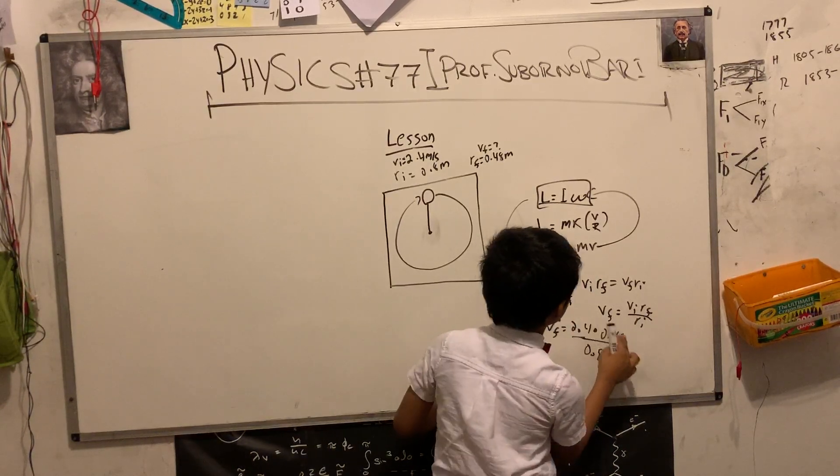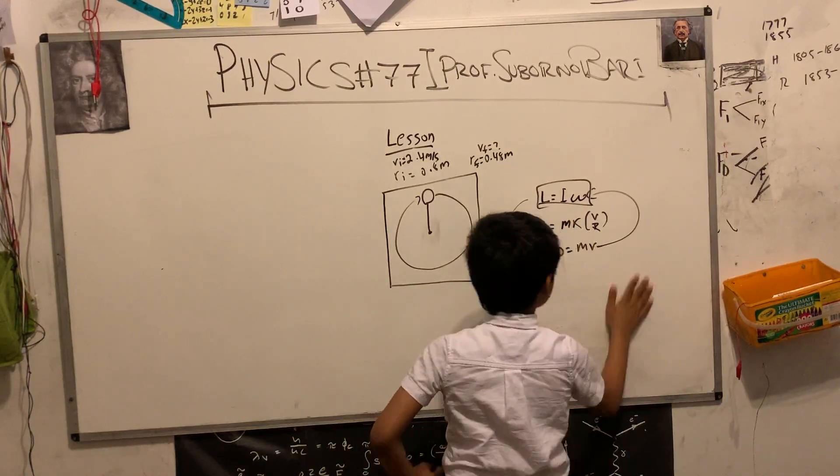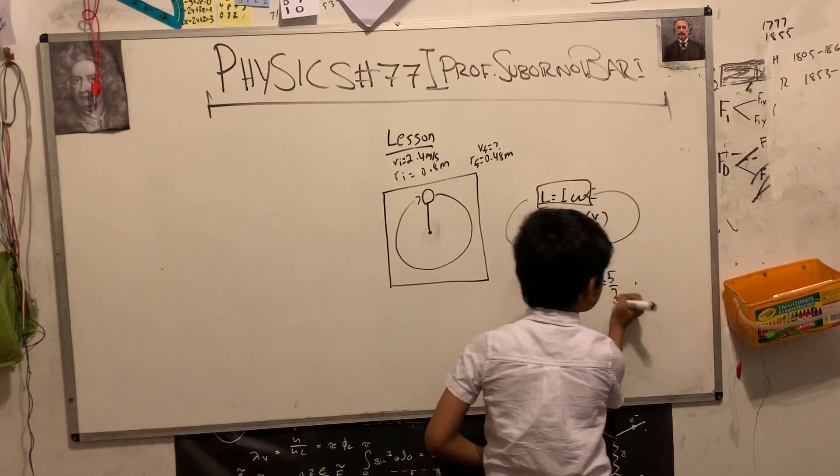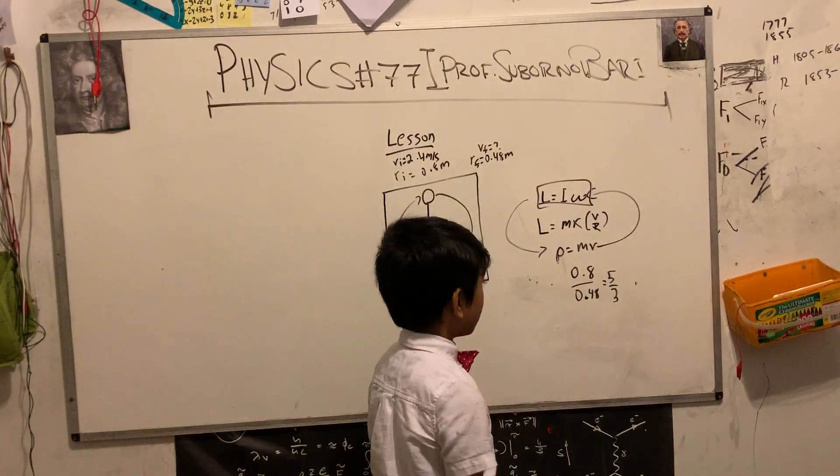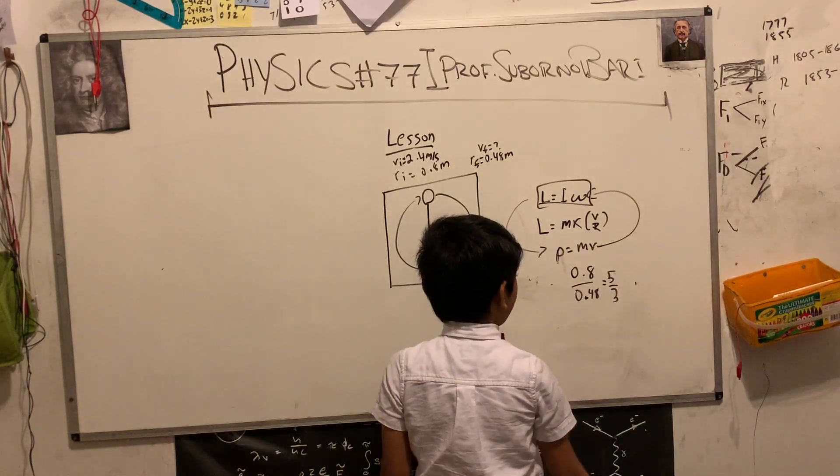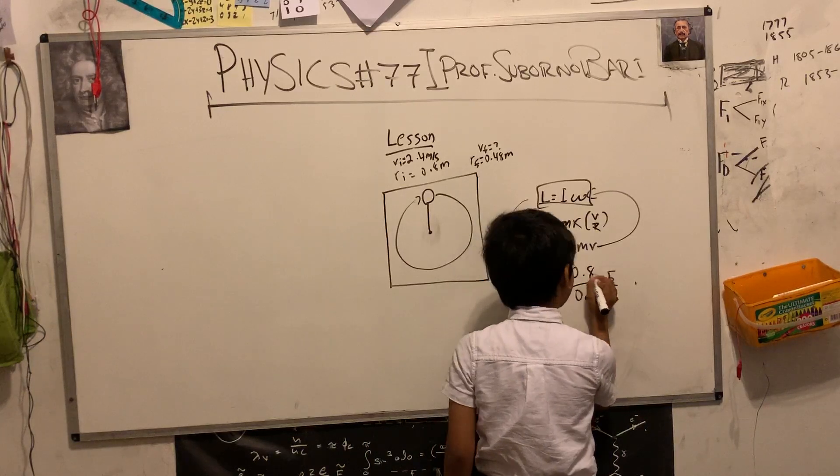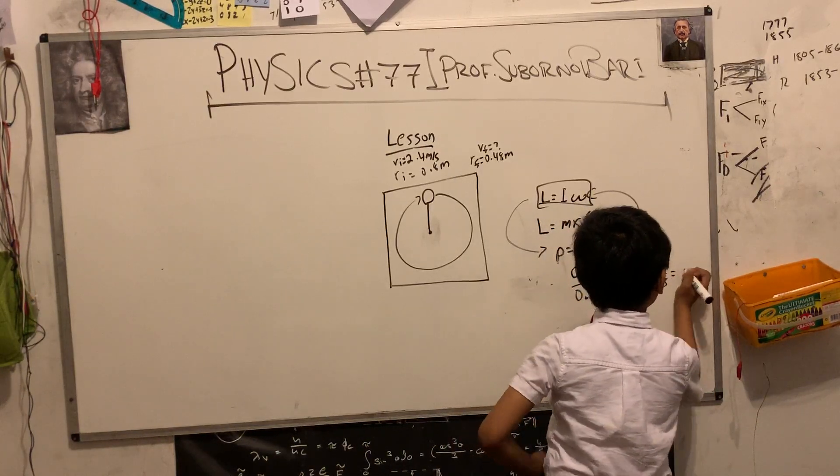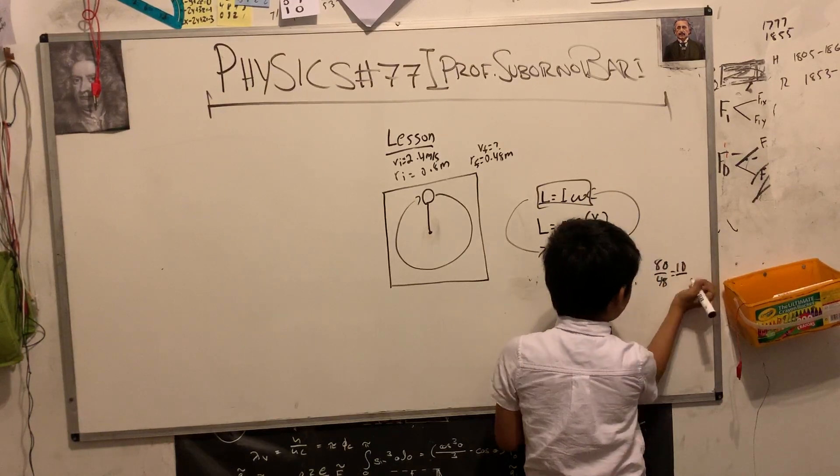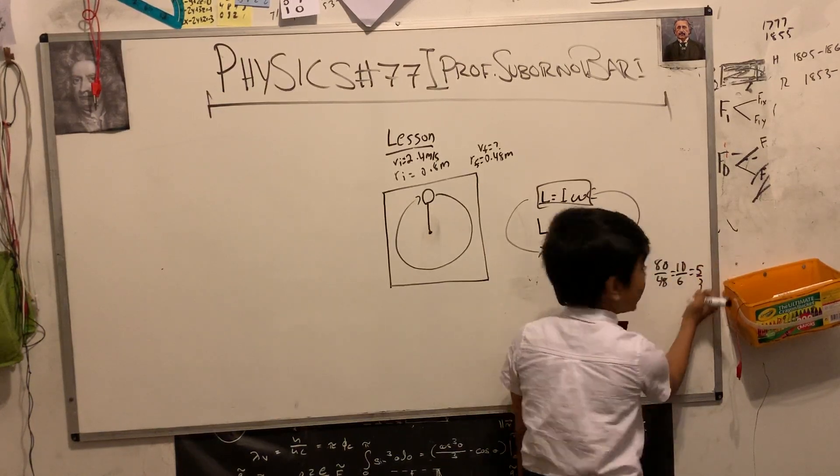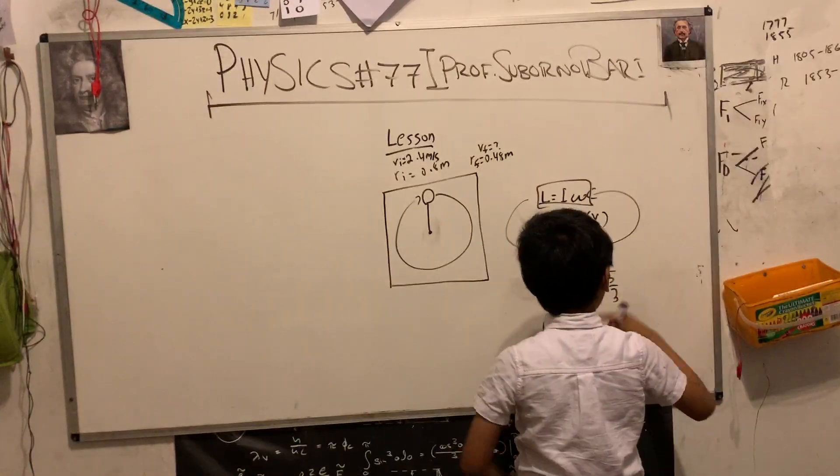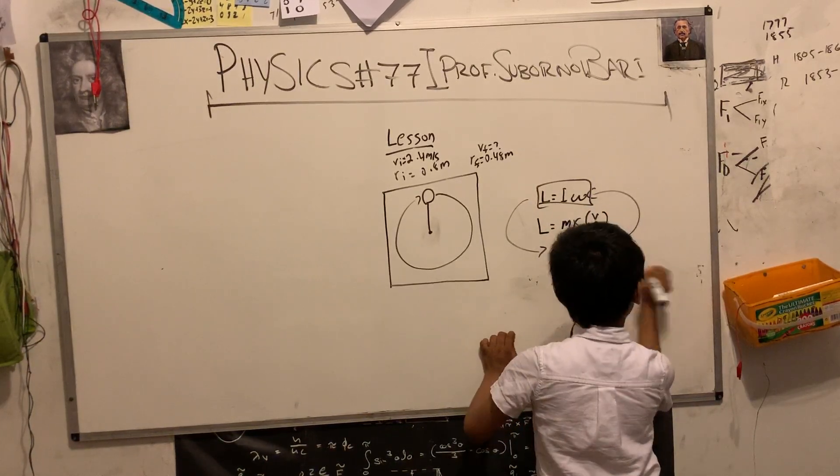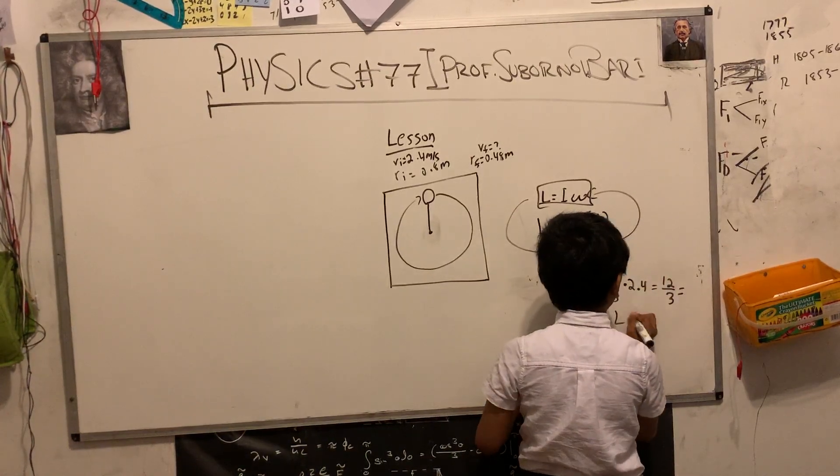What is the factor it decreases by? 0.8 over 0.48. 80 over 48, which is 40 over 24. Let's simplify by 8. That means 10 over 6, which is 5 over 3. So now, 5 over 3, and then multiply by 2.4. 5 times 2.4 is 12 over 3. It's exactly 4 meters per second.